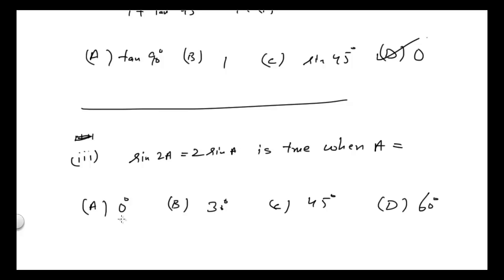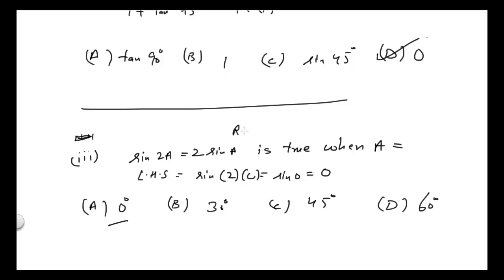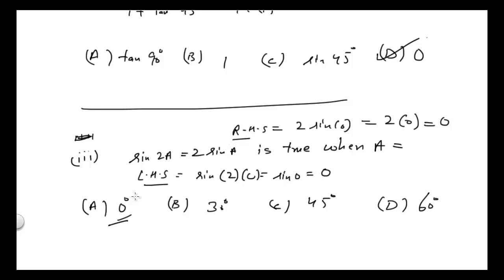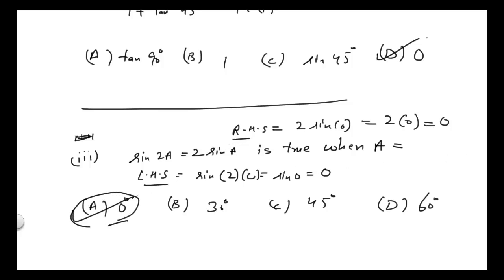The answer would be a = 0°. If I put a = 0°, the left-hand side is sin(2×0°) = sin 0° = 0. The right-hand side is 2 times sin 0° = 2 times 0 = 0. So left-hand side equals right-hand side for 0°, and the answer is A.